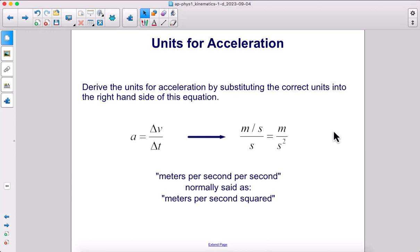You can derive the units for acceleration by substituting the correct units into the right-hand side of this equation. The units for velocity are meters per second. The units for time are seconds. Therefore, we get meters per second per second, but the seconds are both in the denominator. This moves down to the denominator, giving us meters per second squared, which is how it's normally said.